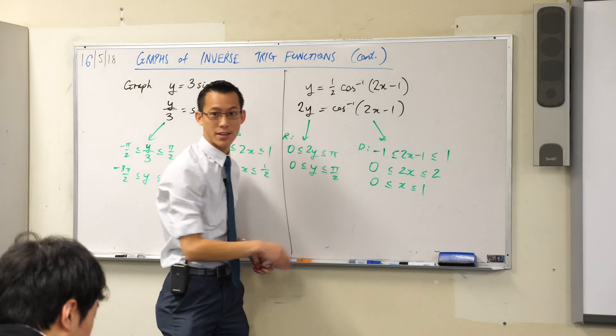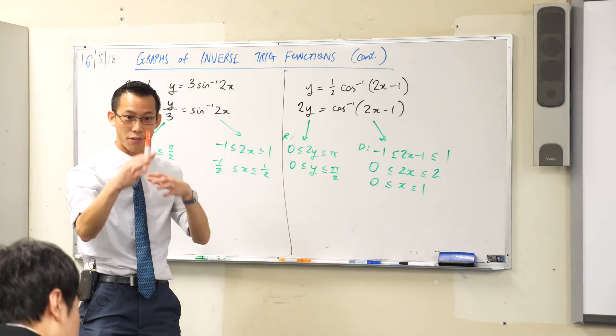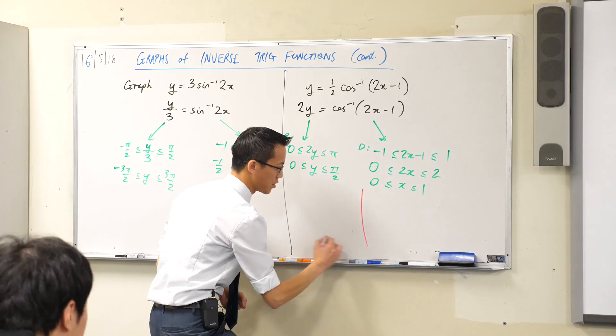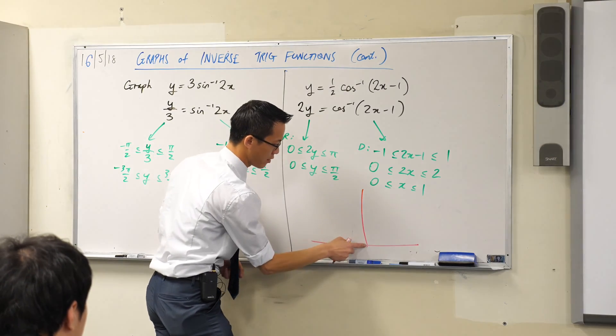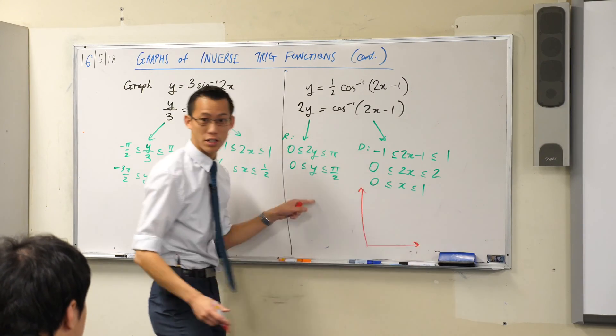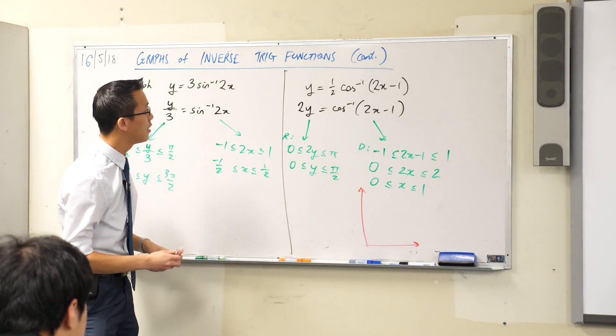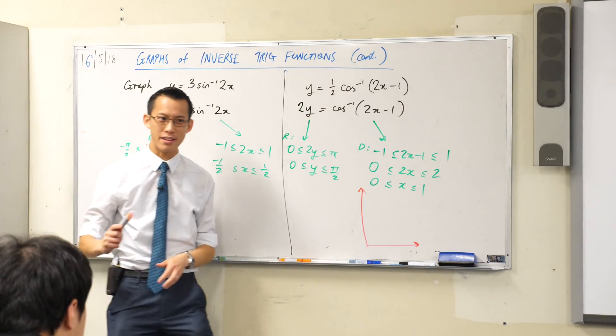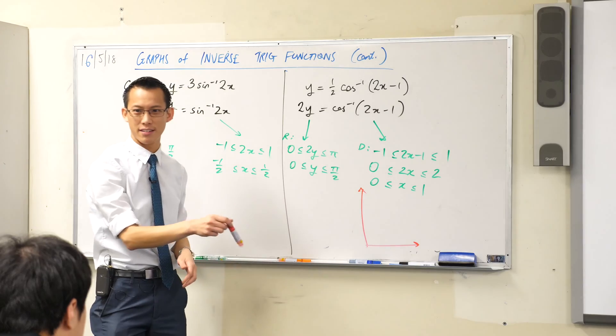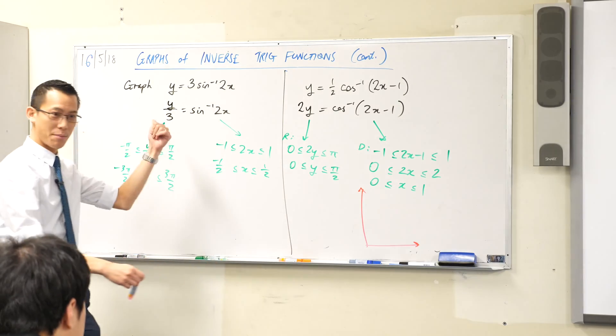One of the nice things about doing this first is you now automatically know which part of the graph you actually need to draw. So I don't need anything over here. This whole thing is in the first quadrant. Do you see the values? Cos inverse, is that the one that is increasing or the one that's decreasing? It's decreasing, we just established that over here.